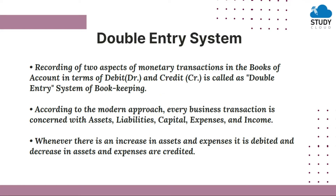Every business transaction will have two effects. One transaction will go to the debit side and another one will go to the credit side — that is known as the double entry system. For example, if you purchase machinery, there are two effects: machinery comes into your business, and you make payment for it with cash or a check.